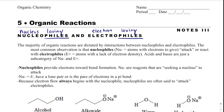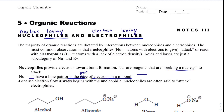A nucleophile is something that is seeking a nucleus. By definition, a nucleophile is something that's delta-negative, and it could have a lone pair of electrons or a pair of electrons in a pi bond. If you've studied AP chemistry, you know that a double bond is one sigma bond and one pi bond. So double bonds are actually great examples of a nucleophile.